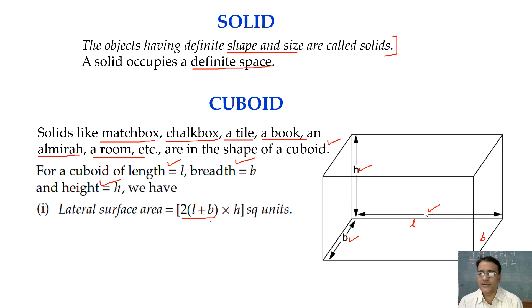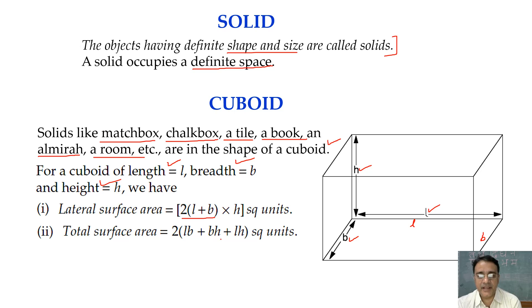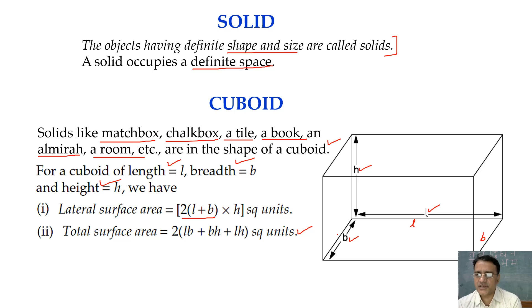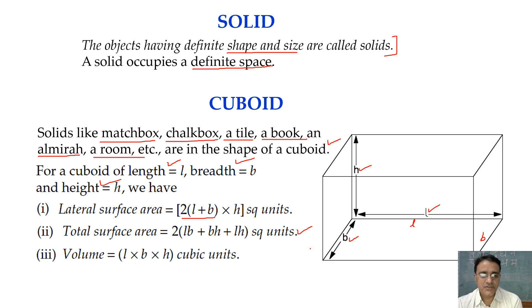The total surface area of cuboid is 2(LB + BH + HL) square units. One more formula: the length of the diagonal is √(L² + B² + H²). The volume of cuboid is length × breadth × height, in cubic units.